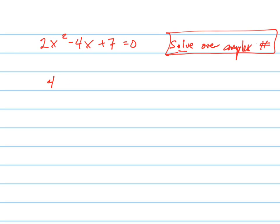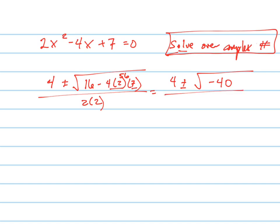It's the opposite of b plus or minus the square root of b squared, which is 16, minus 4ac all over 2a. And now we're going to simplify that. That equals 4 plus or minus the square root of, that's a times 7, which is 56, so it's negative 40 all over 4.